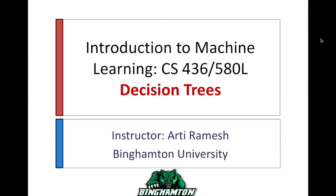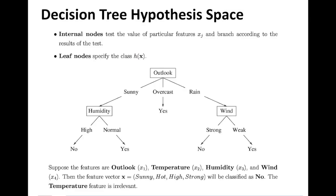Welcome back to Introduction to Machine Learning. Today we are going to look at decision trees. To understand decision trees, let's first look at the decision tree hypothesis space and how decision trees are organized. Decision trees correspond to how we make decisions in real life — we ask a series of questions where the current question is based on the previous ones. Decision trees are constructed similarly: nodes correspond to questions and branches correspond to the different answers.